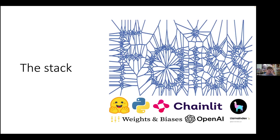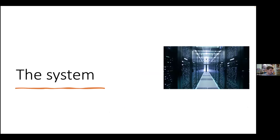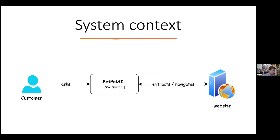LlamaIndex as a framework to bind everything together. I feel that for this RAG problem — because in the end it is a RAG problem — the way data is handled by LlamaIndex is more data-oriented, so I find it better for this approach. The system context is quite simple: we have the PetPal.ai software system, a customer that asks questions regarding the website, and we have some raw data from the sitemap. I read the sitemap, get all the information, and create the web vector store in order to answer questions.